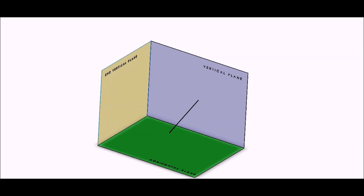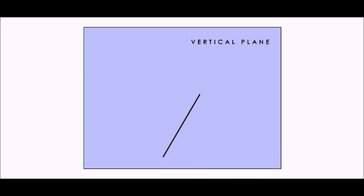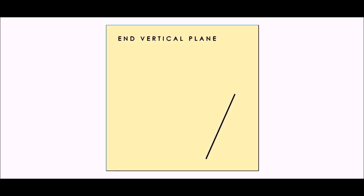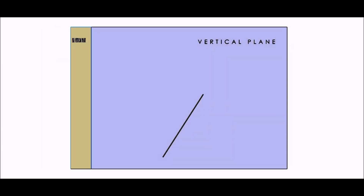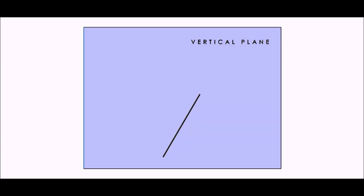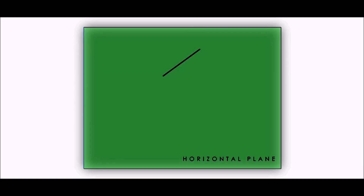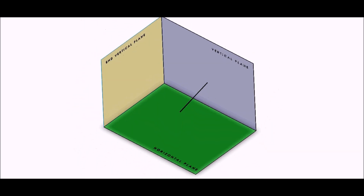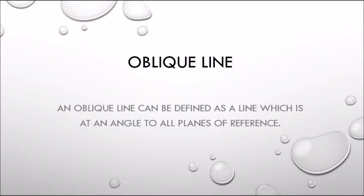Here we see a SOLIDWORKS model of an oblique line in the views of elevation, end view and plan. An oblique line can be defined as a line which is at an angle to all planes of reference.